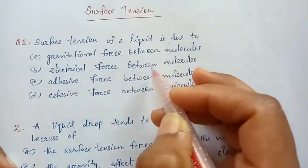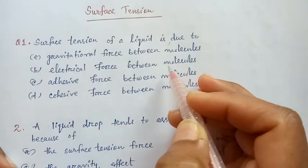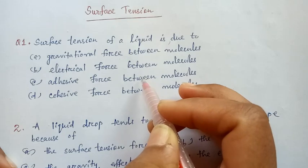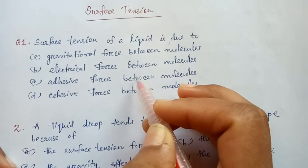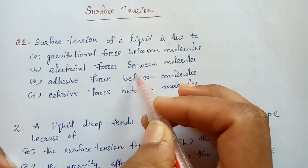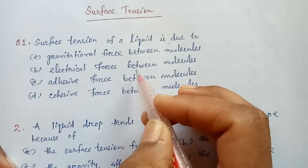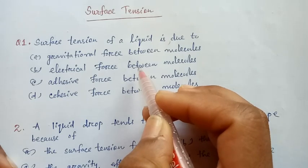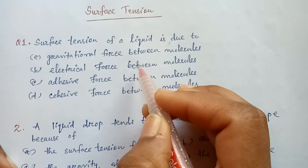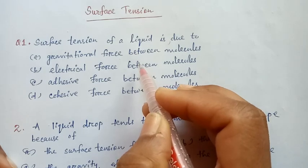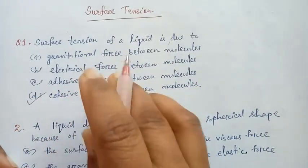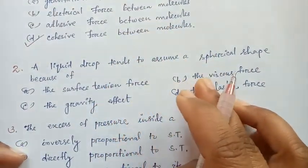The options are: gravitational force between molecules, electrical force between molecules, adhesive force between molecules, or cohesive force between molecules. Surface tension of a liquid is due to the force of attraction between similar or like molecules of a liquid. The force of attraction between like or similar molecules is called cohesive force or force of cohesion. So the answer is option D.